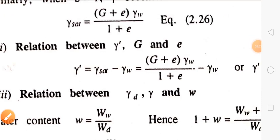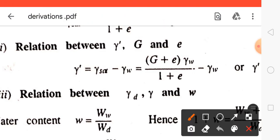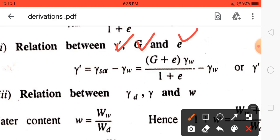Hello everyone. Now we will derive the relation between gamma dash — that is submerged unit weight — specific gravity, and voids ratio.